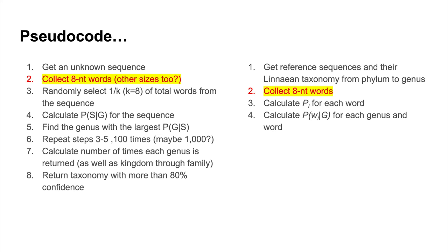In the last episode, I developed this outline of the different steps we need to do to get a classification. The items on the left side correspond to our unknown sequences, and the things on the right are what we need to do with our reference sequences. Both columns have a common feature: collecting eight-nucleotide words — and possibly other sizes. So in today's episode, we're going to use test-driven development to build that feature.